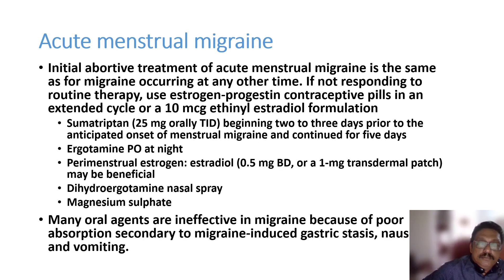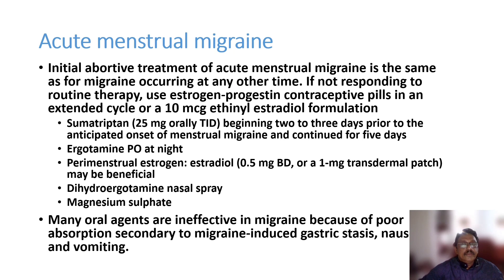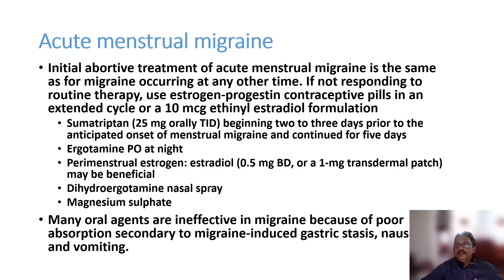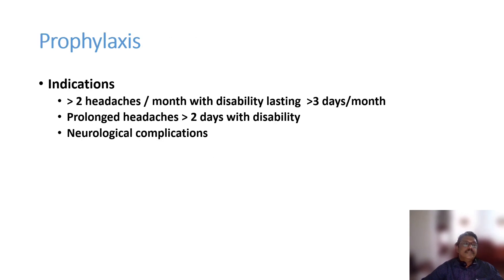For acute menstrual migraine, options include sumatriptan, ergotamine, perimenstrual estrogen, dihydroergotamine nasal spray, and magnesium sulfate. Magnesium sulfate gives good symptom relief in many patients but may not work for all — treatment must be tailored to the individual patient.